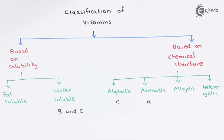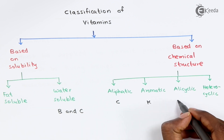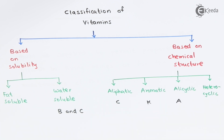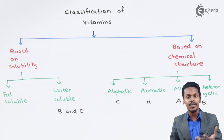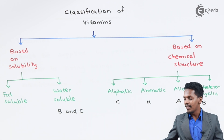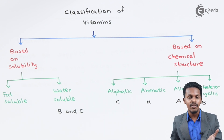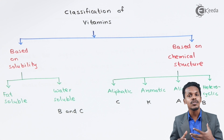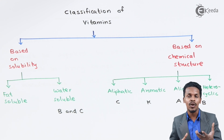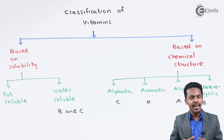Talking about alicyclic vitamins: vitamin A is alicyclic. And talking about heterocyclic vitamins: the vitamin B complex — including B1, B2, and so on — are the heterocyclic vitamins, because they not only consist of regular hydrocarbons but also consist of other elements like sulfur and nitrogen.